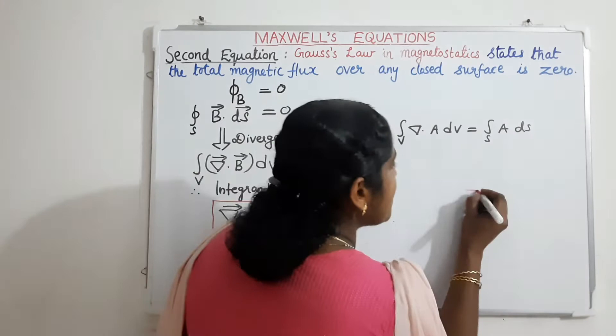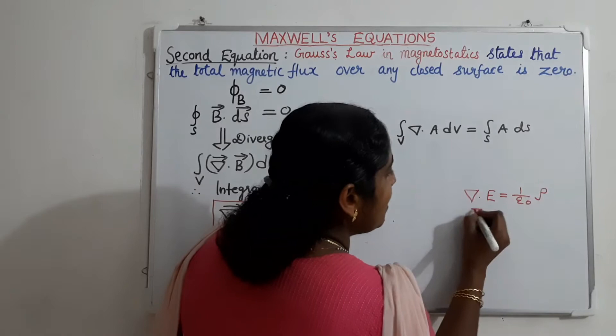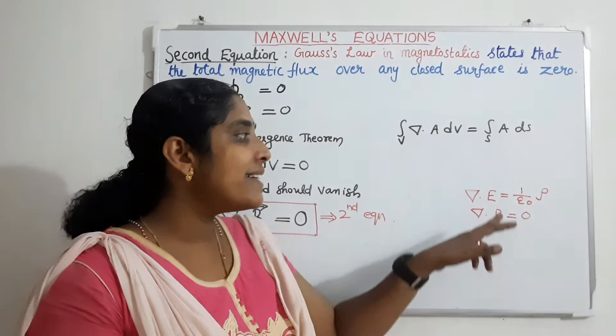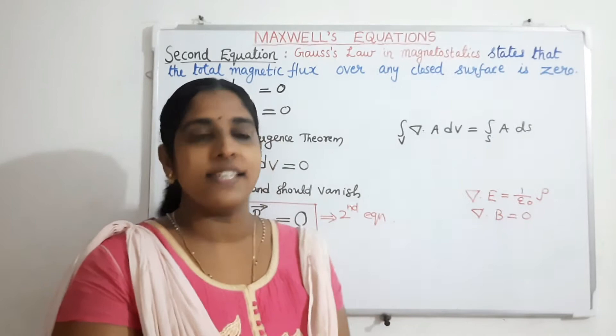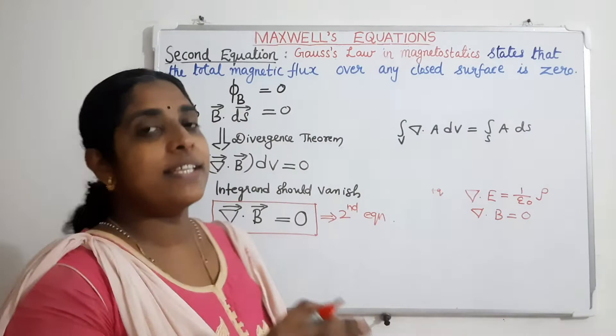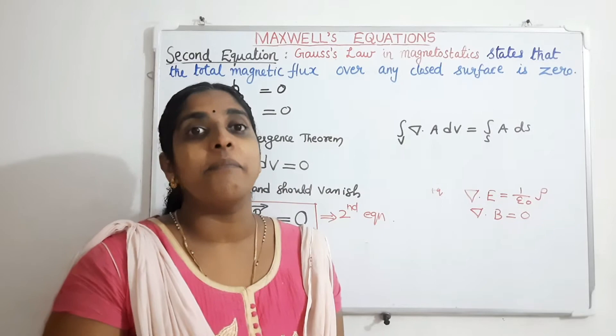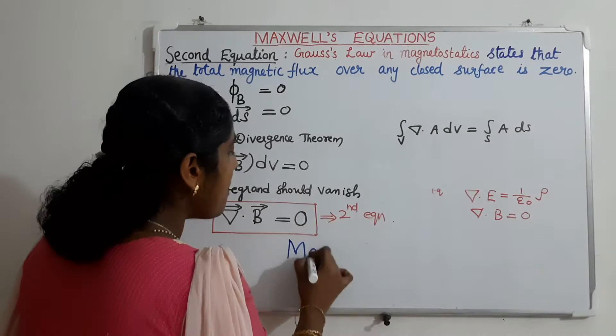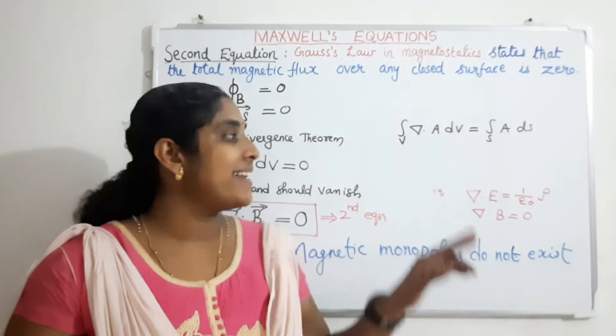The first equation gives del dot E equals 1 by epsilon-0 rho, while the second equation gives del dot B equals 0. There is a dissimilarity because in the case of the electric field, isolated charges can exist — a single positive or negative charge can exist alone. But in magnetism, magnetic monopoles do not exist. That is why del dot B equals 0. Maxwell's second equation signifies that magnetic monopoles do not exist, which is why there is a dissimilarity between the first and second equations.